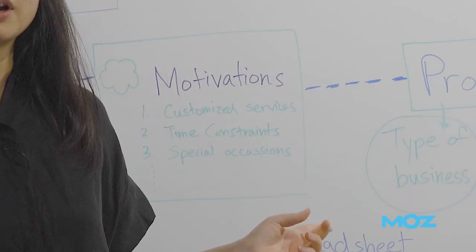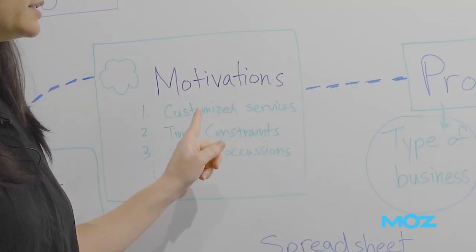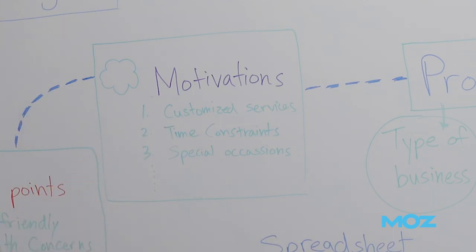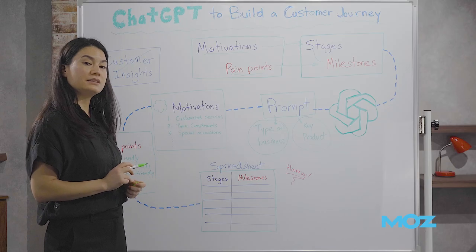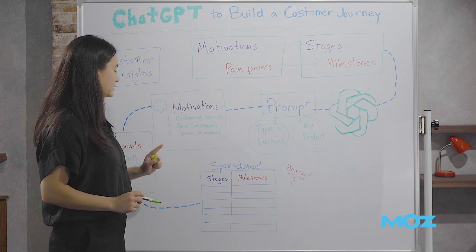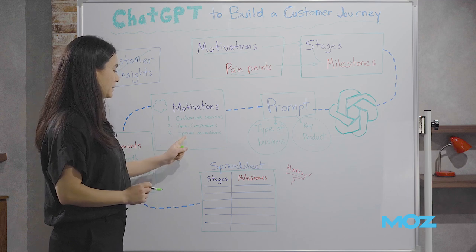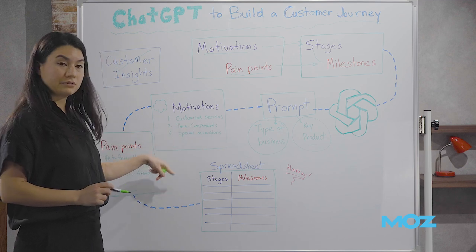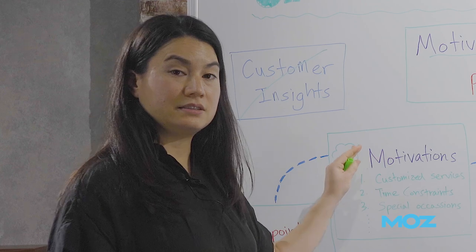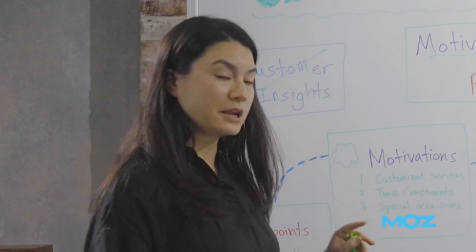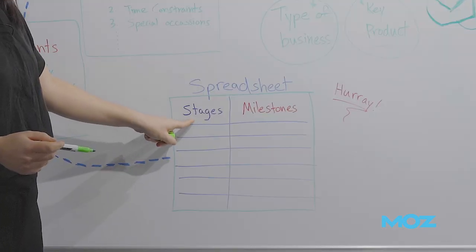ChatGPT will respond with a list of motivations. This list includes customized services, time constraints, special occasions, and more. Copy and paste your list into a spreadsheet under stages.